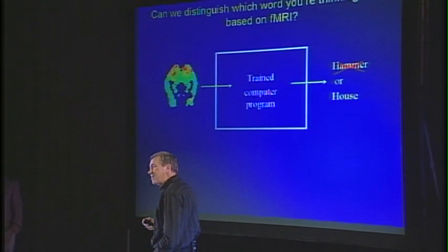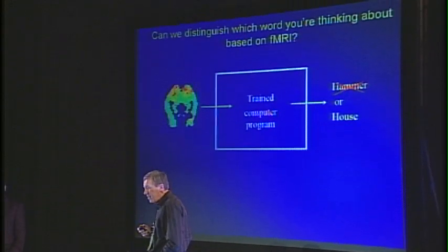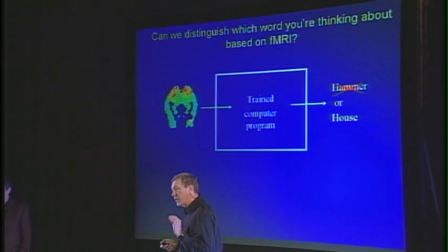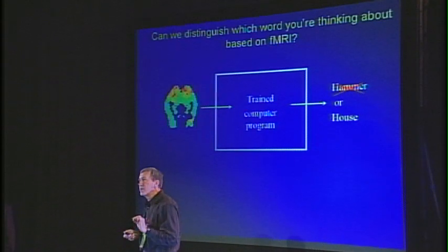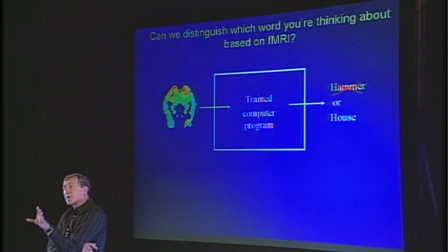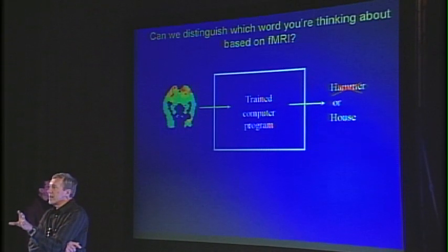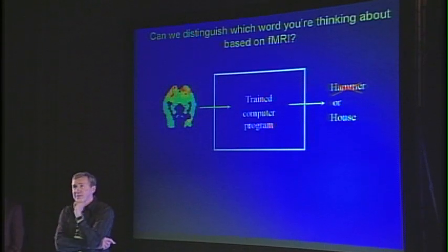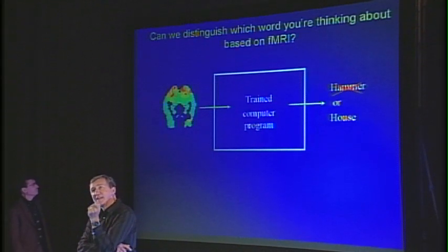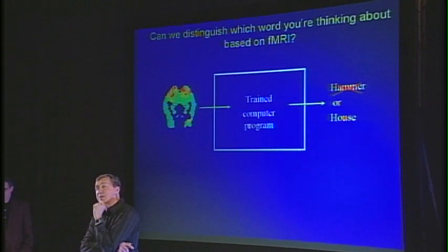We got interested in the question of how we could study the patterns of activation and whether there's some structure to these — are they the same in your head as they are in mine? The first thing we decided to do was to see whether we could train a computer program by showing it examples. Here's an fMRI image when somebody's thinking about house, here's one when they're thinking about bottle, here's one when they're thinking about horse. Then we train that program so it can learn the pattern of neural activity that's the signature for these different words, and test it by showing it additional brain images to see if it can tell us which word they were thinking about.